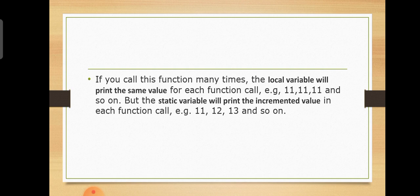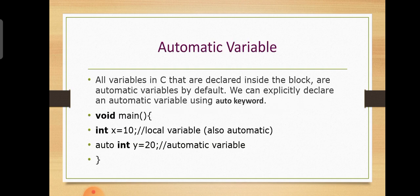If you call this function many times, the local variable will print the same value for each function call — for example, 11, 11, 11, and so on. The static variable, however, increments each time. That is the static variable explained.